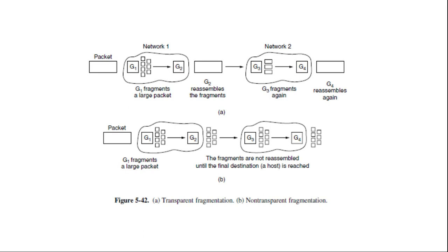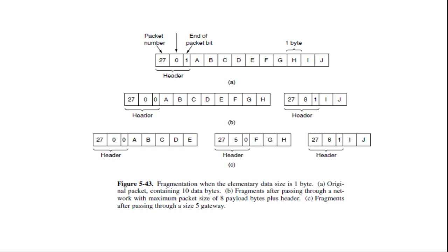There is an example here, fragmentation when the elementary data size is 1 byte. Here in this example, while simple, this design has some attractive properties. Fragments can be placed in a buffer at the destination in the right place for reassembly even if they arrive out of order.